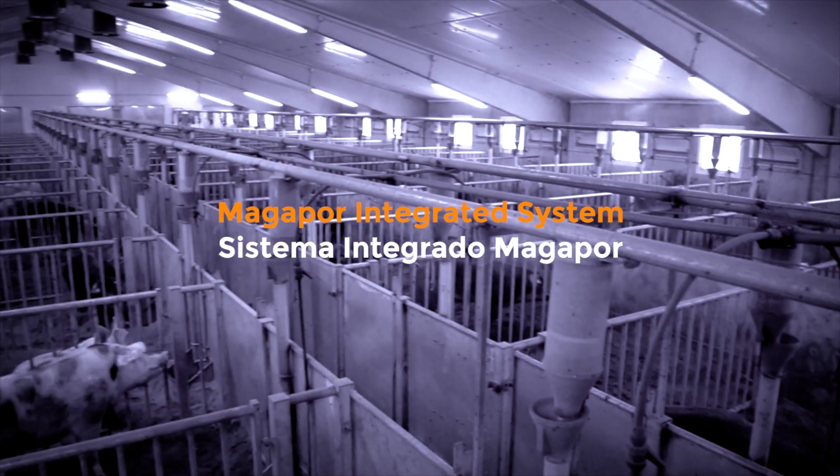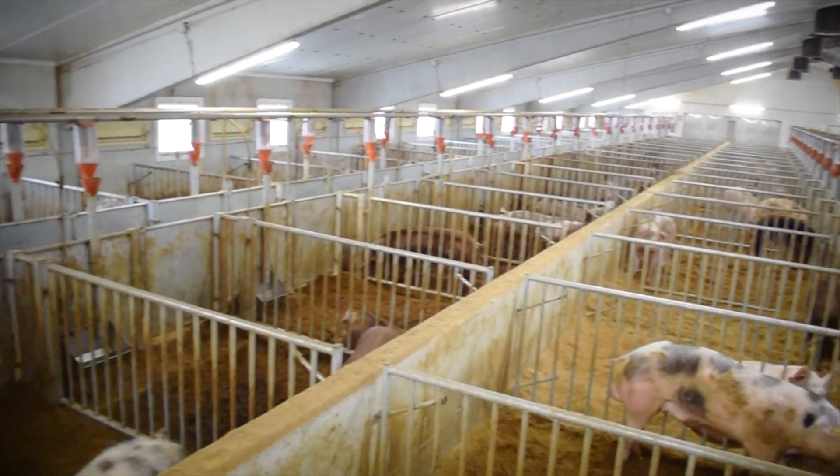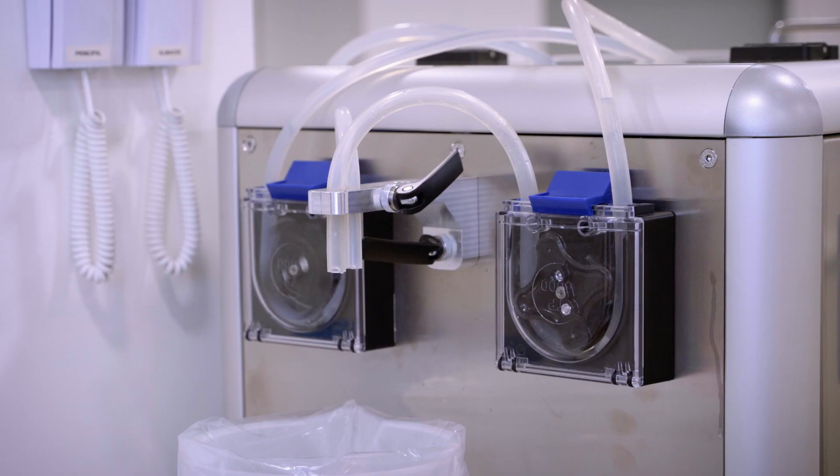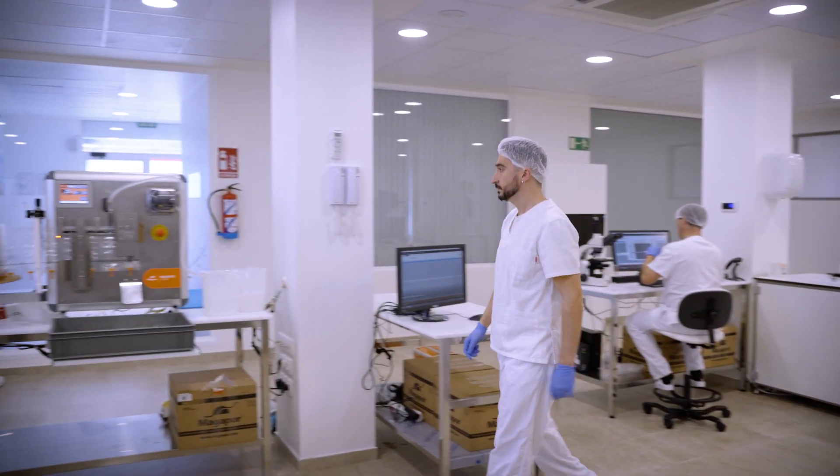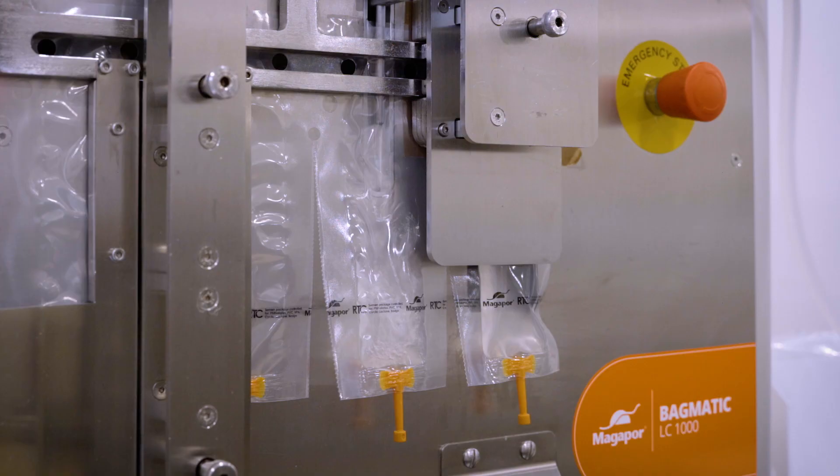The Magapore Integrated System is a working concept developed by Magapore that integrates and automates all the semen dose production process with total traceability. Versatile and efficient, it adapts to all the needs, forms of work, and size of the boar studs, evolving with the know-how and experience of Magapore.